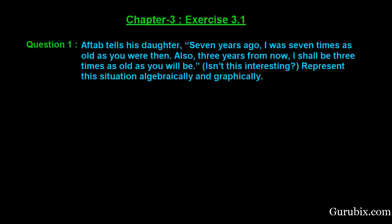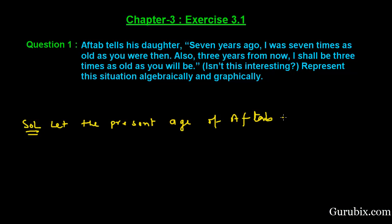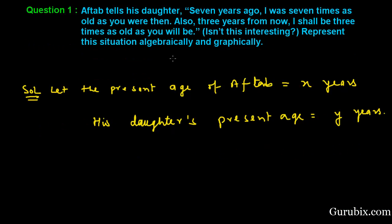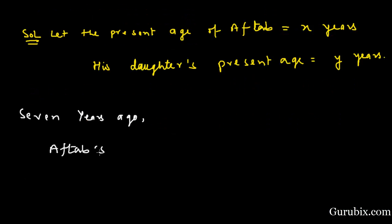Let us see how to do it. First of all, we shall let the present age of Aftab be equal to x years, and his daughter's present age be equal to y years. Now we shall find the ages of both Aftab and his daughter seven years ago.